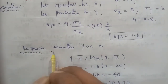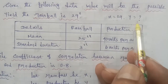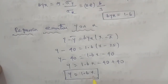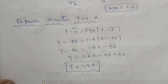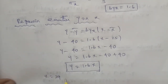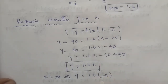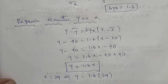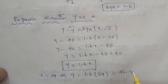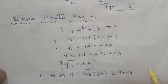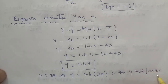Now in the question, x is equal to 29. Substituting x equal to 29 into the regression equation y equal to 1.6x: y equals 1.6 into 29, which gives y equal to 46.4. So the possible yield when rainfall is 29 inches is 46.4 units per acre. Thank you.